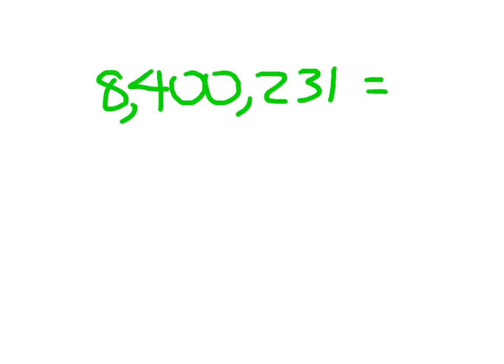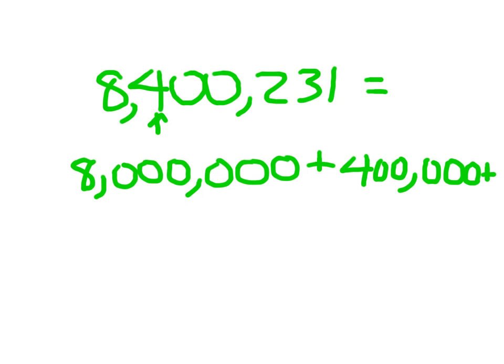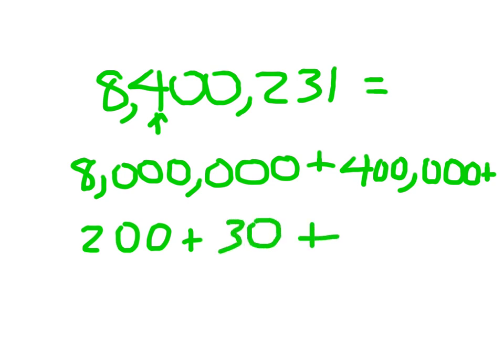Now for the expanded notation of 8,400,231 — we'll start with the digit in the far left, the digit with the most value. The value of that 8 is 8,000,000. So we write 8,000,000, which is an 8 followed by 6 zeros. Plus the value of that 4, which is 400,000. The value of this 0 is nothing, so we skip it. That 2 is worth 200. And finishing it out, that's plus 30 plus 1.